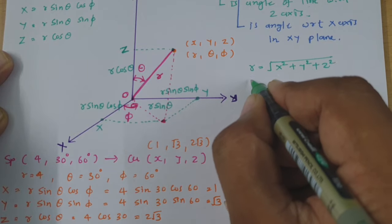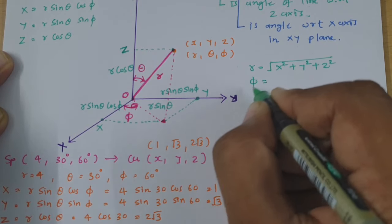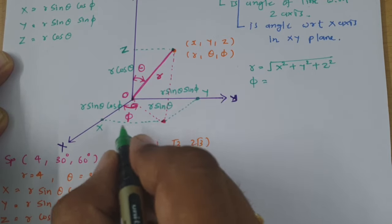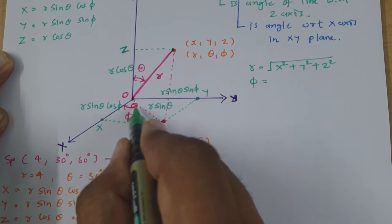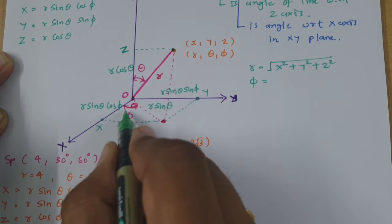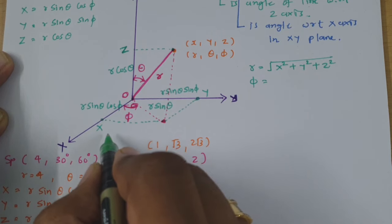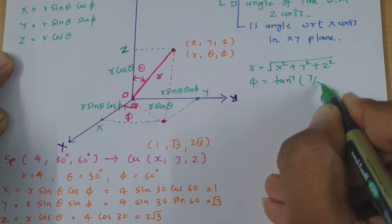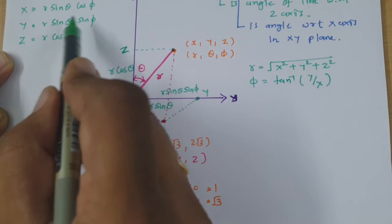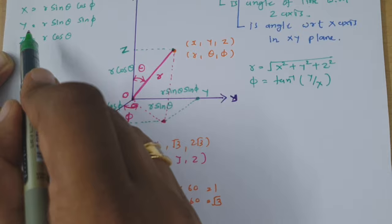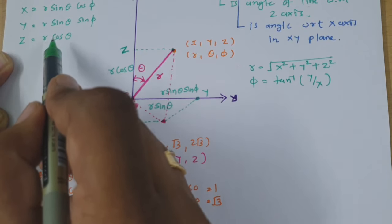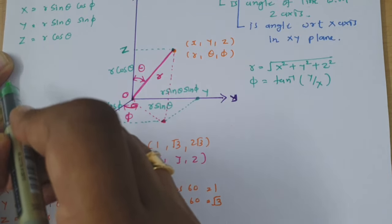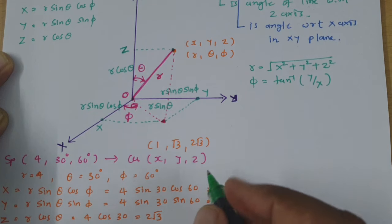For the calculation of Phi, it is similar to what we have seen for the Spherical Coordinate System. Phi equals tan inverse of Y divided by X. You can cross-verify: tan inverse Phi equals tan inverse of Y by X.